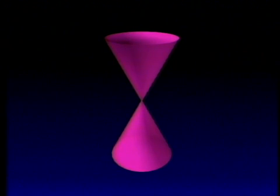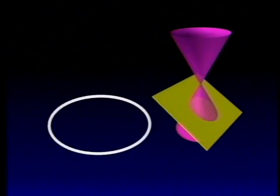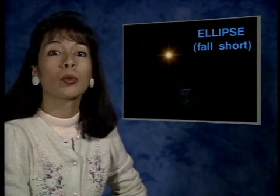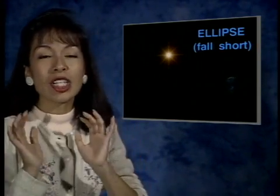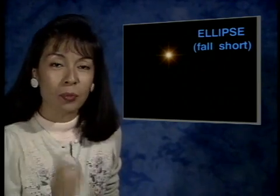If instead we cut the cone at an angle slightly off of perpendicular to the axis, the path of the cut would be an ellipse — another very special curve with very natural applications in our world. In astronomy, for example, the planets in our solar system, as well as Halley's Comet, revolve around the sun in elliptical orbits. The word 'ellipse' comes from a Greek word meaning 'to fall short.' For our purposes, it is easier to remember that an ellipse falls short of a circle — it is not perfectly round.